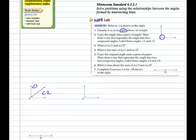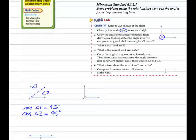The measure of Angle 1 is 45 degrees. The measure of Angle 2 is 45 degrees as well. Therefore, the sum of the two angles, Angle 1 and Angle 2, would be 90 degrees.